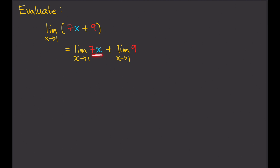This is a multiplication, so we can also break this down using the multiplication rule. We can write that as the limit of 7 as x approaches 1, times the limit of x as x approaches 1, plus the limit of 9. Now, the limit of 7 as x approaches 1 is 7, because 7 is a constant, so that's just 7.